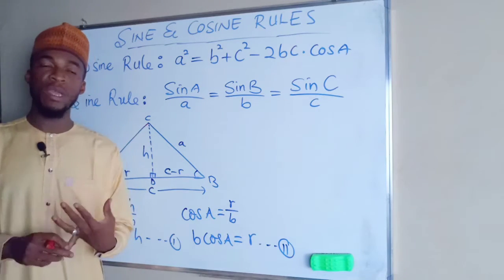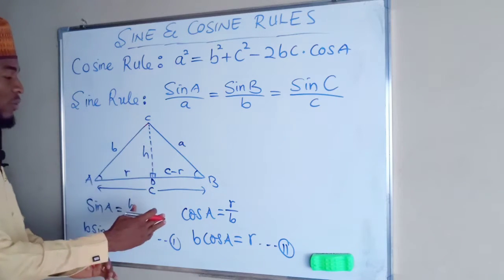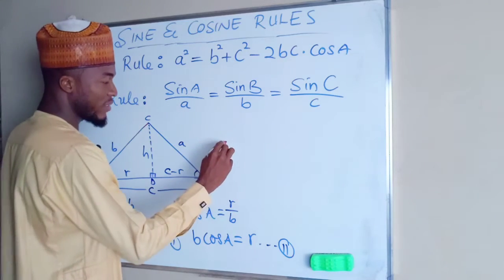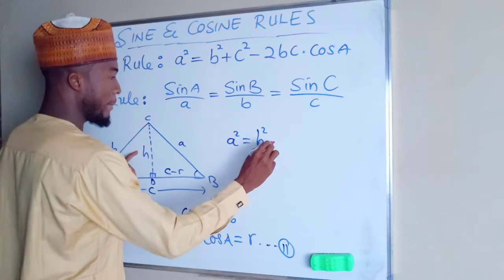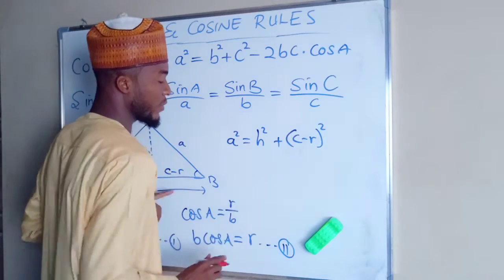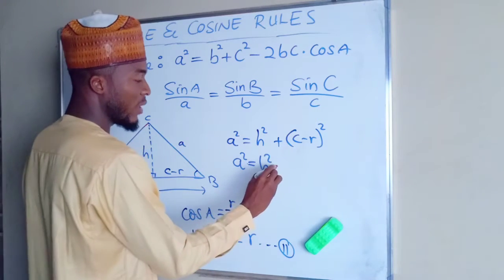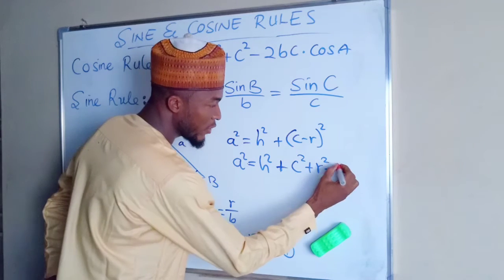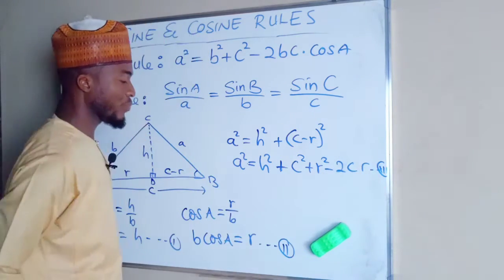From Pythagoras' theorem, hypotenuse squared equals opposite squared plus adjacent squared. Using triangle CDB: the hypotenuse is a, so a² = H² + (c − R)². Expanding (c − R)² gives a² = H² + c² + R² − 2cR. Call this equation three.